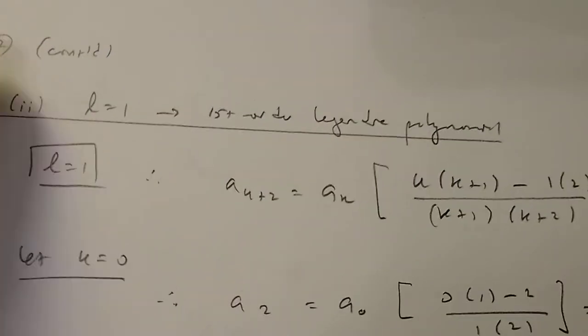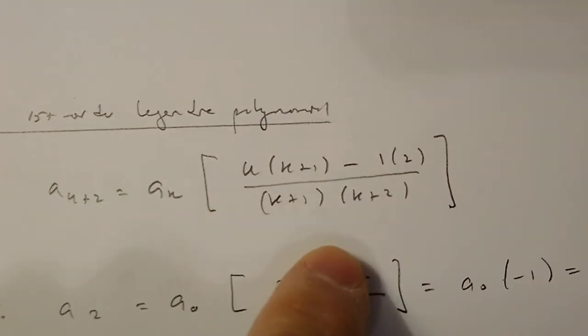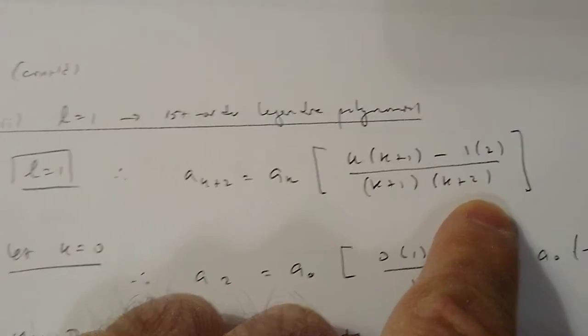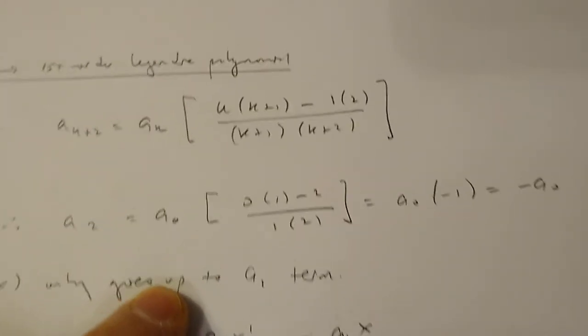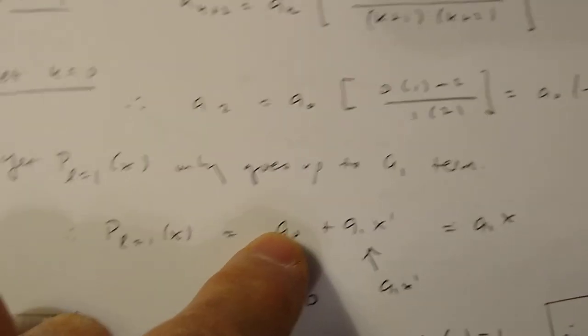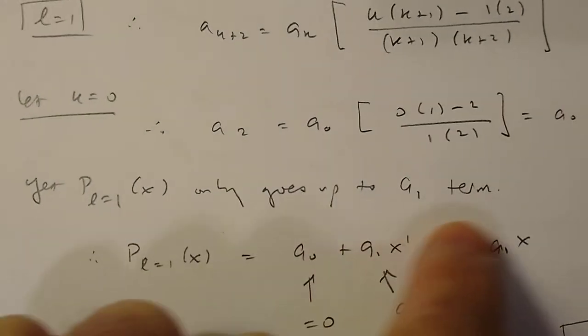Now we proceed to l equals 1 — the first order Legendre polynomial. With l = 1, our (k+2) coefficient is the coefficient two spaces before it times the recursion factor. We start with k = 0 and we get a₂. But wait — we have the first order Legendre polynomial, which only goes up to the a₁ term. This polynomial goes up to k equals l, so for l = 1 we stop at a₁.